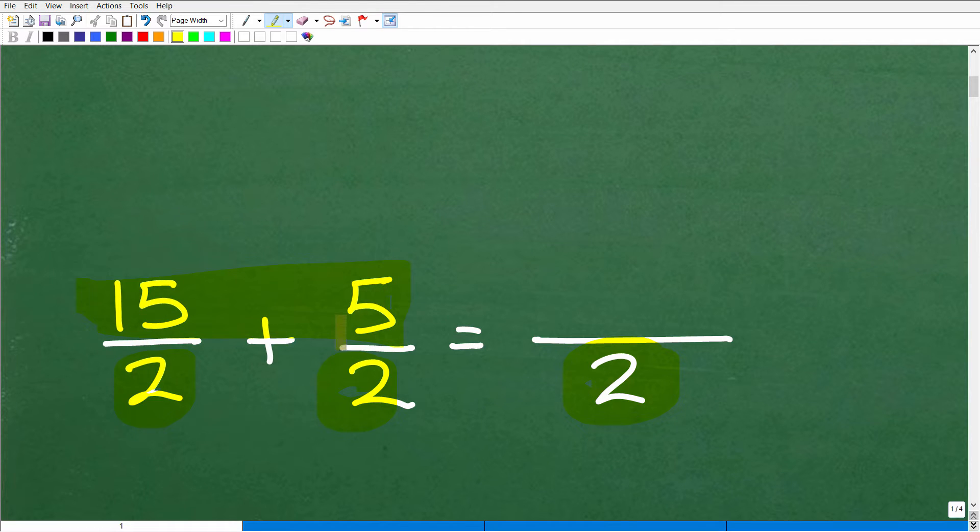And in this particular problem, when we're adding fractions or subtracting fractions, you just perform that respective operation in the numerator. So all we need to do is add the numerators and put it over the same denominator. So this would be 15 plus 5, and 15 plus 5 is 20, and 20 over 2 is 10.